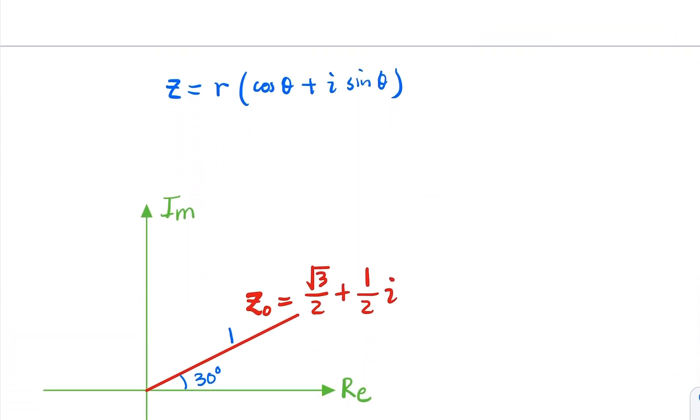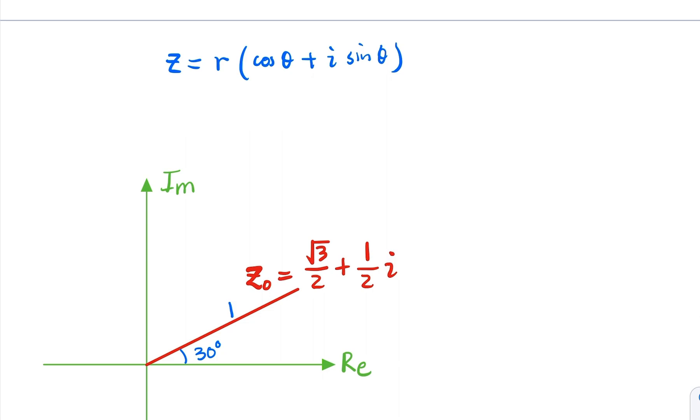Recall that for the complex number of multiplication, if I have a complex number in the original trigonometry form with modulus r and the angle theta, so in the complex plane, let's assume it's going to be somewhere here. That's z. So what is the product of z multiplied by this special complex number with radius 1 and angle 30 degree?